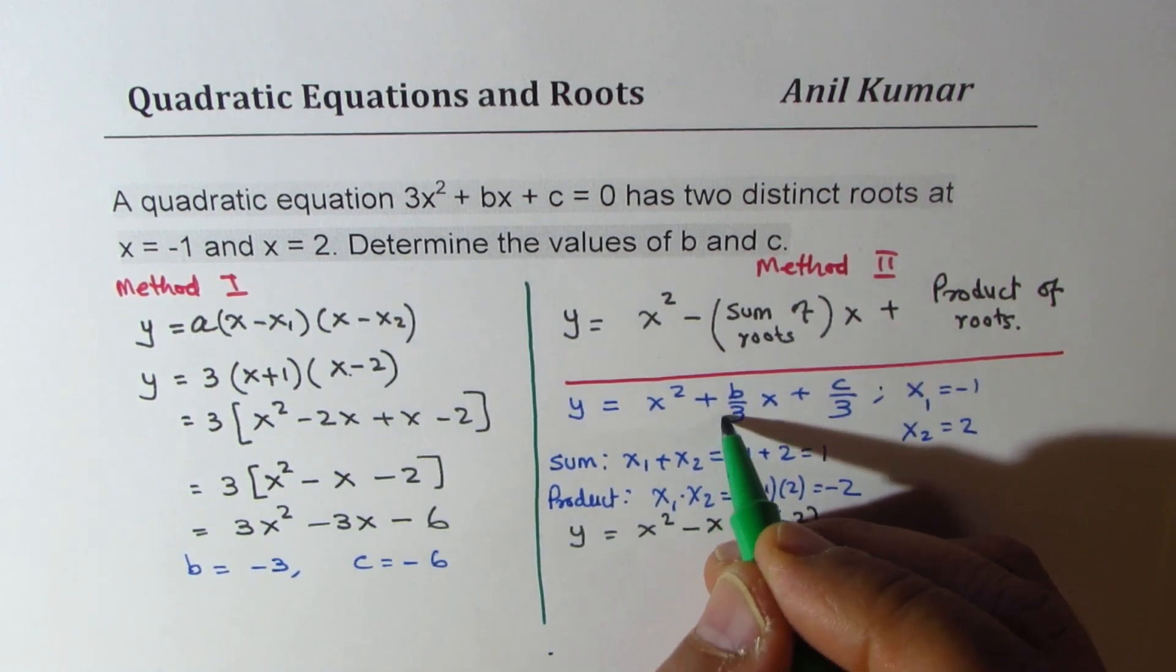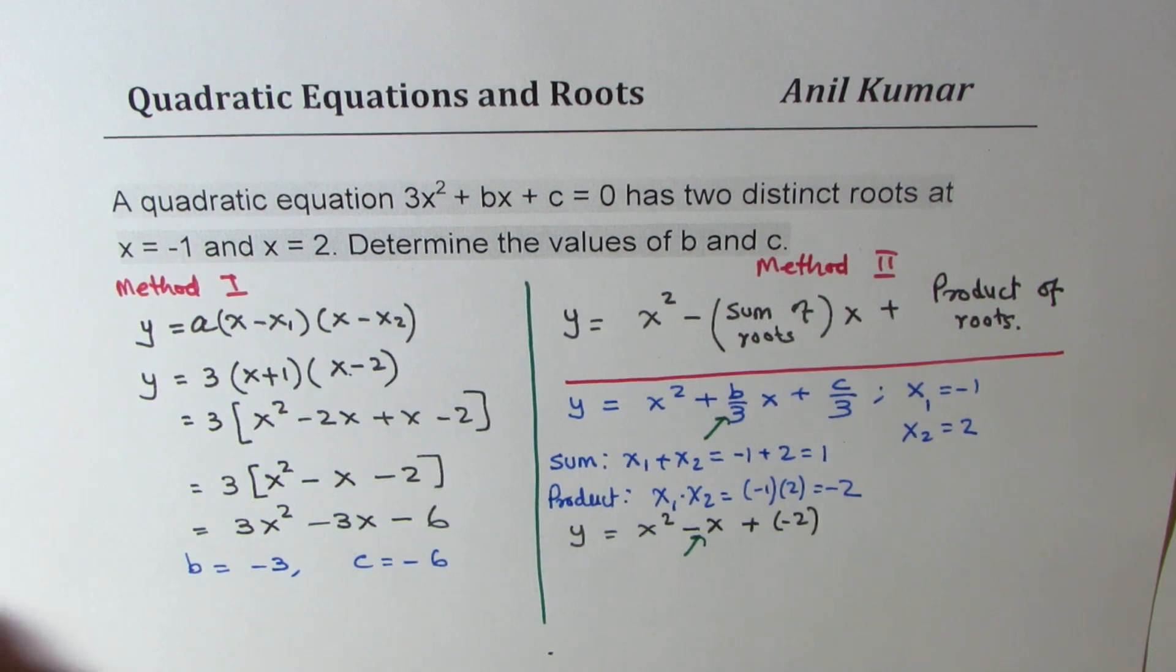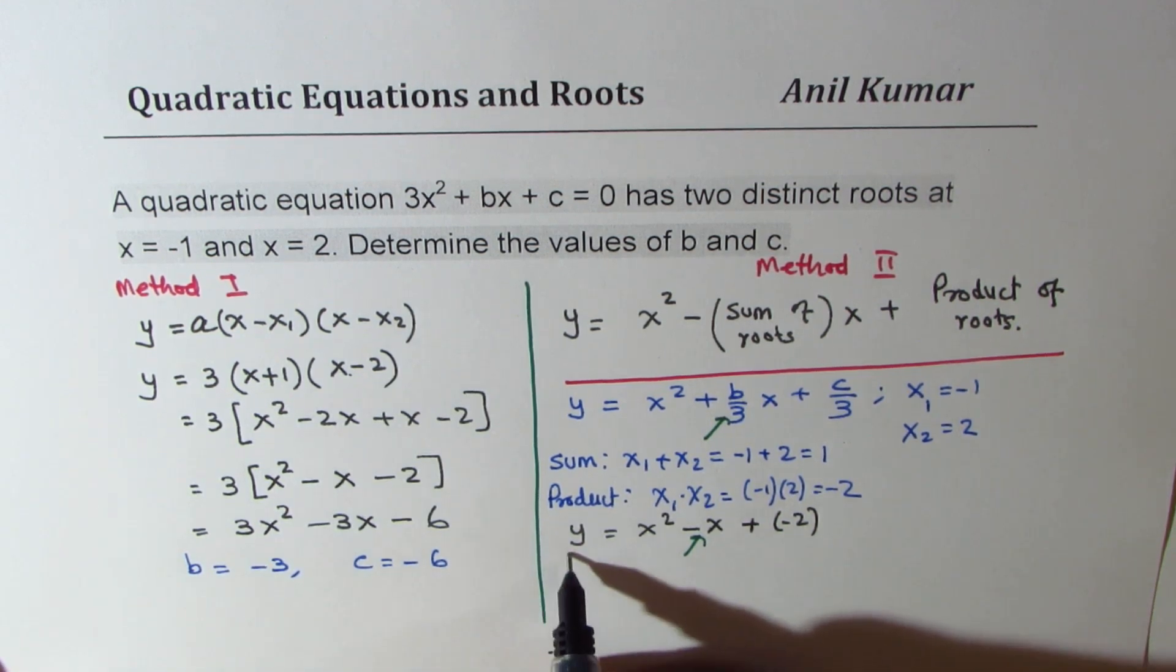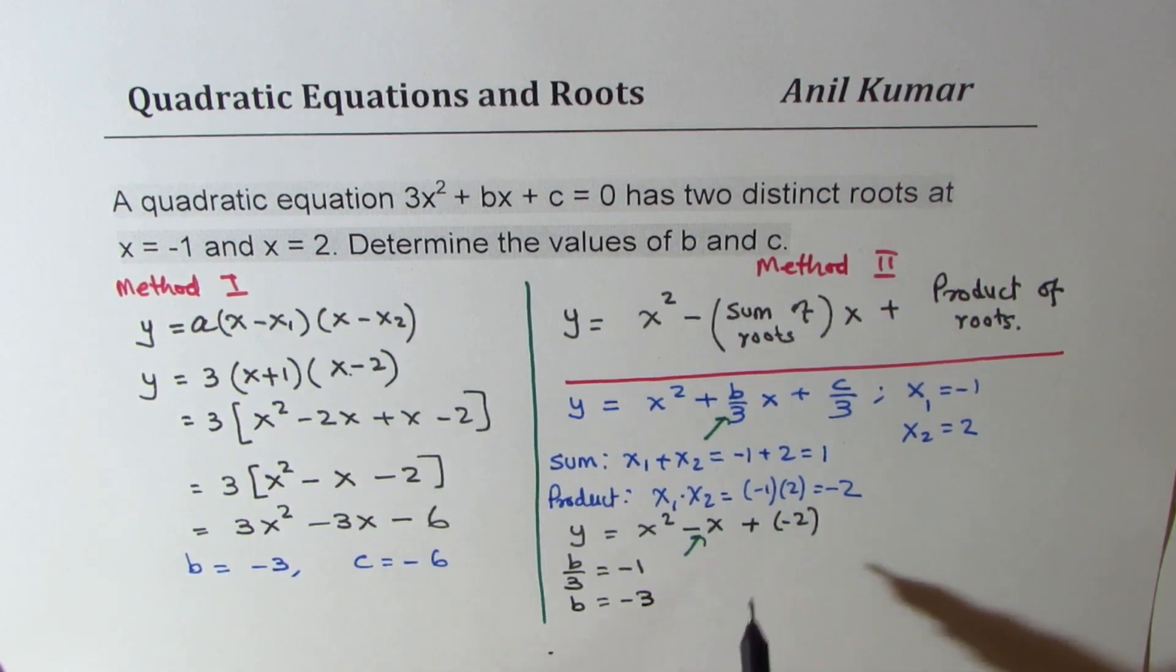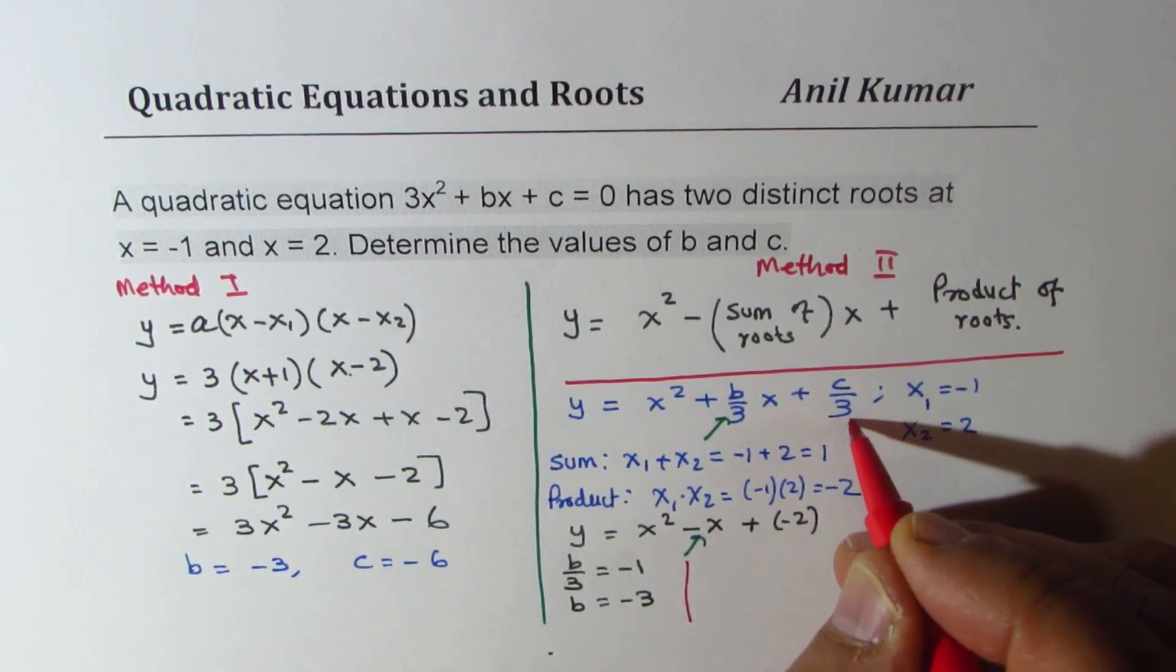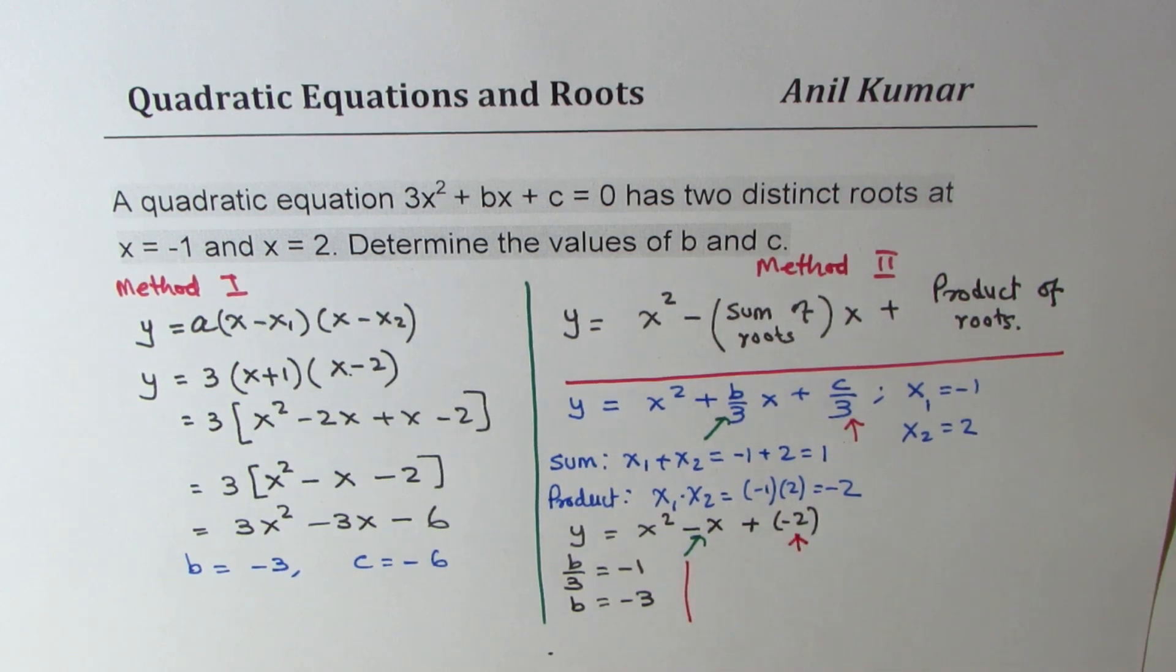So b over 3 should be equal to minus 1. So what we get here is that b over 3 equals minus 1, so b equals minus 3. Second part, what you get here is that c over 3 is minus 2. So we'll now write c over 3 as minus 2, and that gives you c as minus 6.